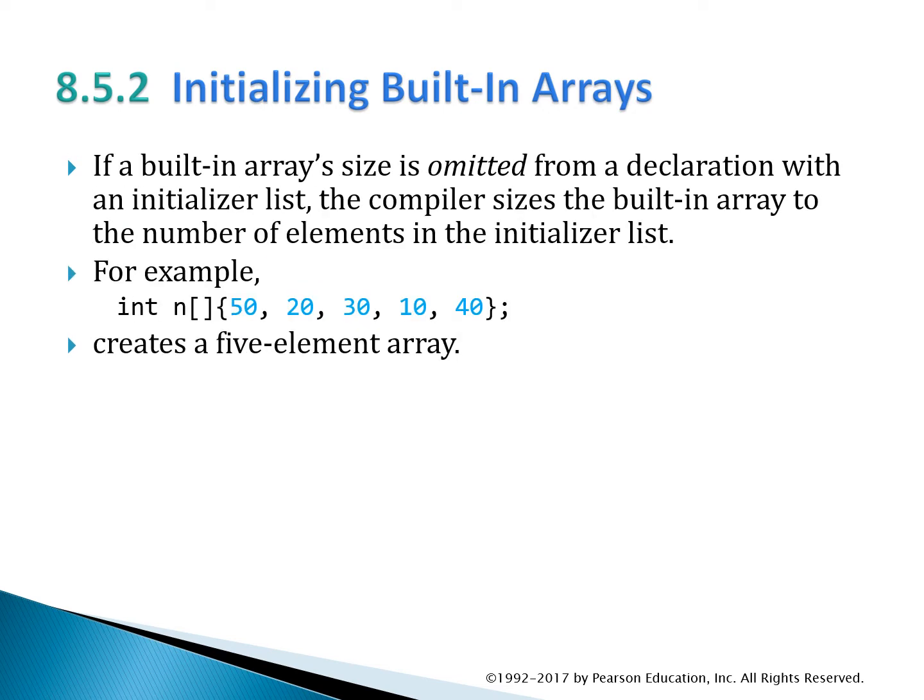If you don't give it a size when you declare it, the number of elements in the initialized list determines the size. For example, if you didn't say five elements but just gave it five values, the compiler would assume it's a five-element array. Even though we didn't specify five, because we had five values initially, it assumes a five-element array going forward.